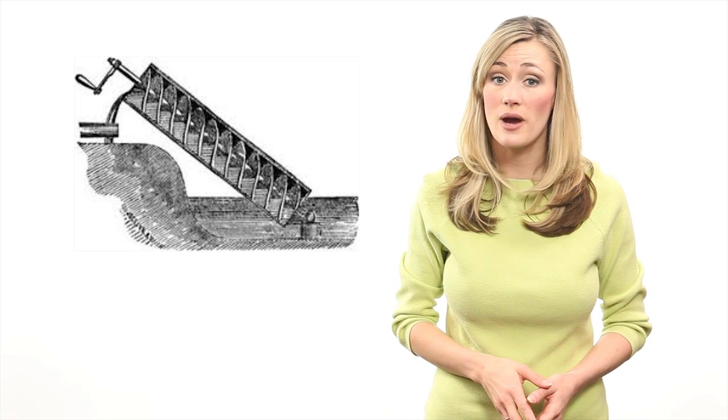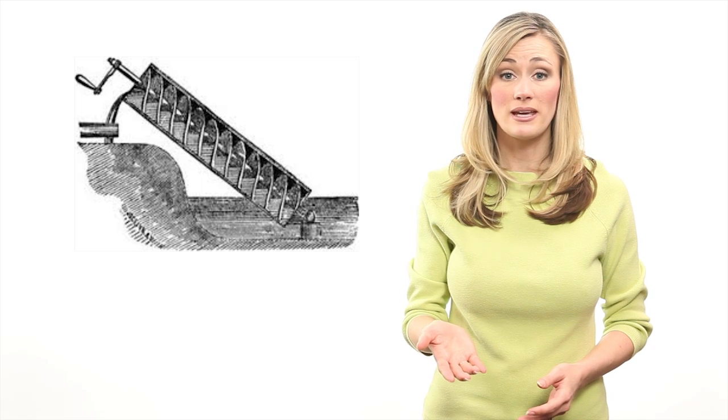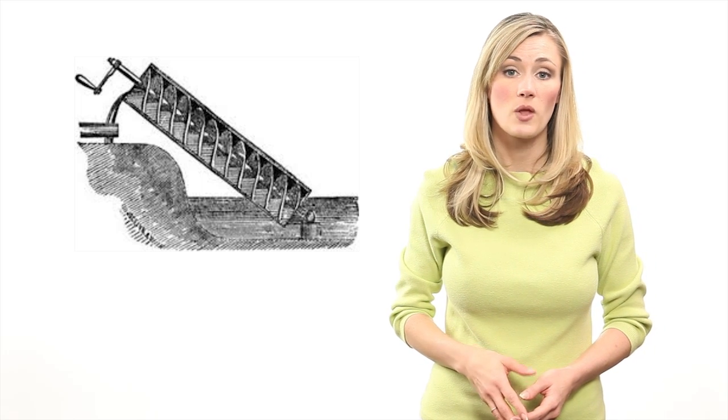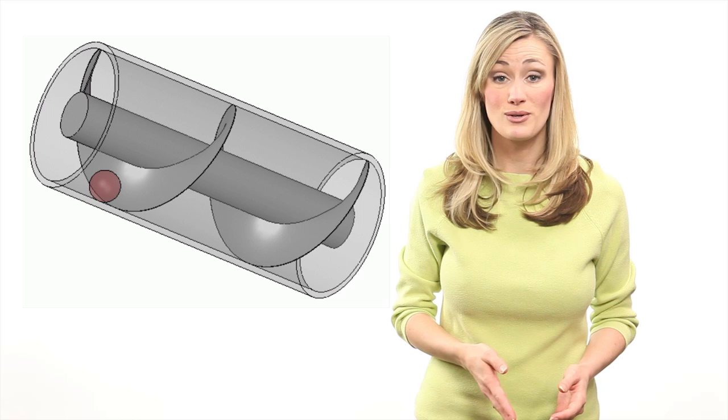An Archimedes screw has many uses, but was most commonly used throughout history to move water uphill. As someone turned the crank manually, the screw blades force water upwards along the threading and thereby transport water uphill. Once the water reaches the top, the screw design releases the water into a trough.